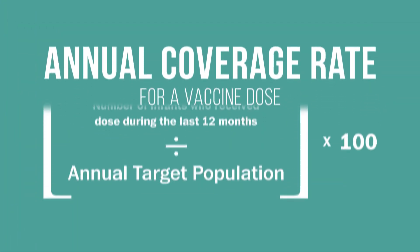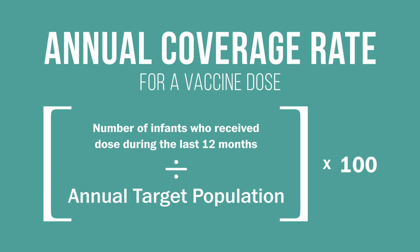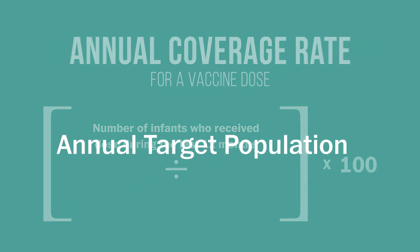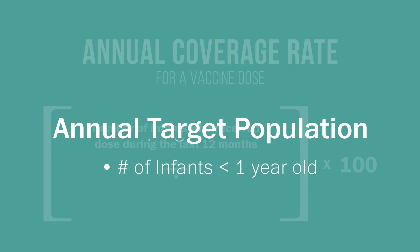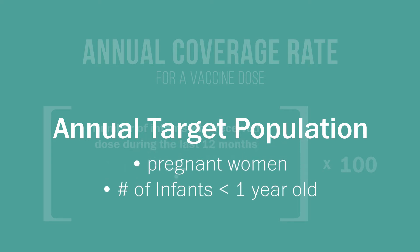Let us look at how you calculate each of these numbers, starting with the coverage rate. Here is the formula for calculating your annual coverage rate. We are going to work through this formula step by step. First, write down the annual target population for the community. The target population may be the number of infants under one year old or pregnant women. Use the official data given to you by the Ministry of Health.